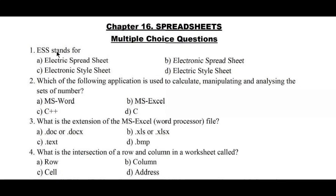Question number 1: ESS stands for — Option A: Electric Spreadsheet, B: Electronic Spreadsheet, C: Electronic Style Sheet, D: Electric Style Sheet. The right answer is Option B, Electronic Spreadsheet.